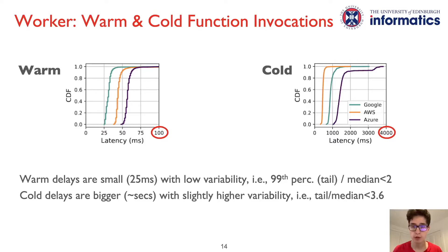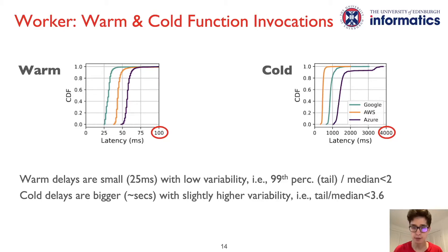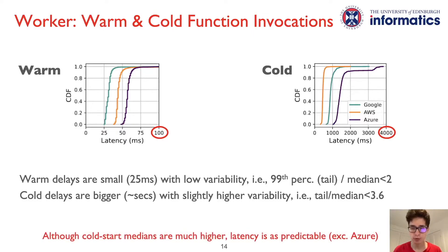First, we evaluate the response time of warm and cold functions by steering invocations to these functions one at a time, with one outstanding invocation at a time to each function with a different inter-arrival time. Invoking functions frequently, for example once per second, results in warm starts, whereas invoking them once in 30 minutes causes cold starts where a function instance needs to be spawned before processing the invocation. These charts show latency CDFs on the y-axis and the latency in milliseconds on the x-axis, with warm invocations on the left and cold on the right. Note that the x-axis limits on the two charts are different because cold invocations are much slower than warm. One can see that warm invocations are much faster than their cold counterparts; however, in both cases, latency variability is quite moderate.